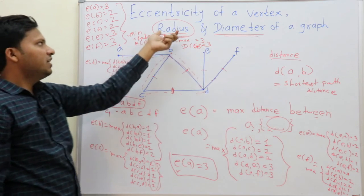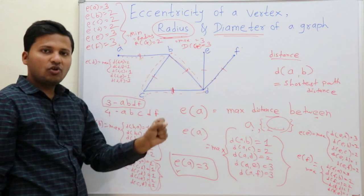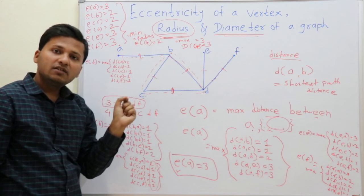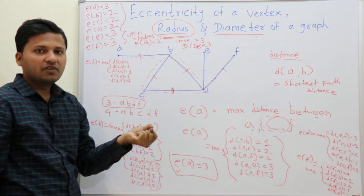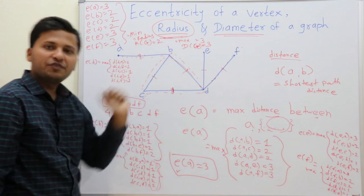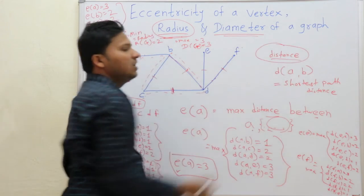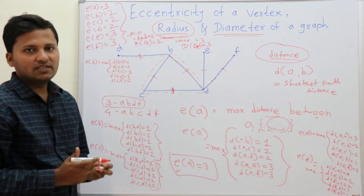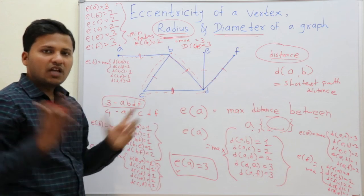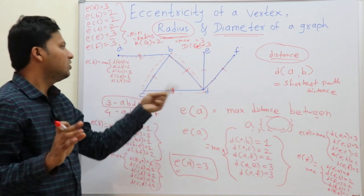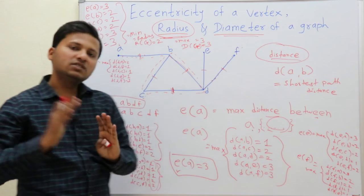The radius of a graph is the minimum of the eccentricities of all vertices, and the diameter is the maximum of the eccentricities of all vertices. We have many algorithms for finding the shortest path distance between two vertices. For large graphs with thousands of vertices, we cannot find distances manually — we need those algorithms, which we will see in further videos.